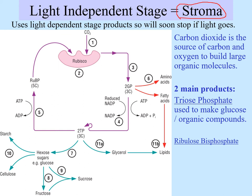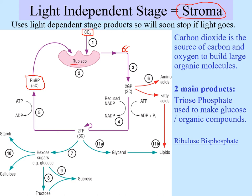We're going to go through this as a cycle, and we're going to start with the molecule ribulose bisphosphate (RuBP). Ribulose bisphosphate is a five carbon compound, and the first thing that happens in the light independent stage is that carbon dioxide combines with the ribulose bisphosphate to make a six carbon compound. That uses the enzyme RuBisCO, which is the most common enzyme on the planet. It combines carbon dioxide (one carbon) plus ribulose bisphosphate (five carbon) to make a six carbon compound.